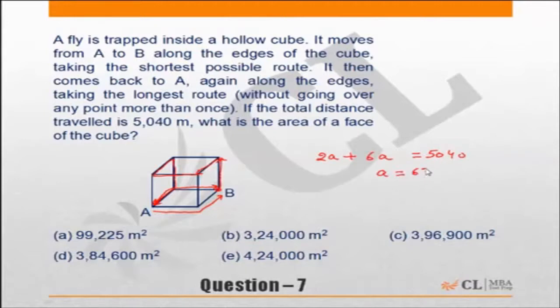Then what is the area of a face of the cube? Area of a face of the cube means a squared, that is 630 squared. So two zeros, 63 squared.